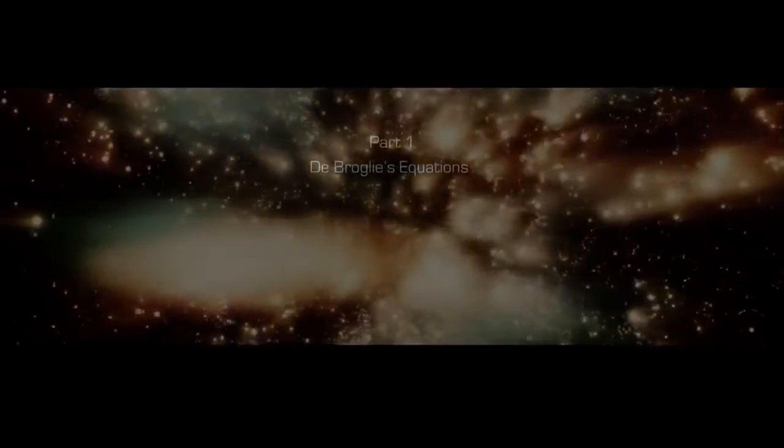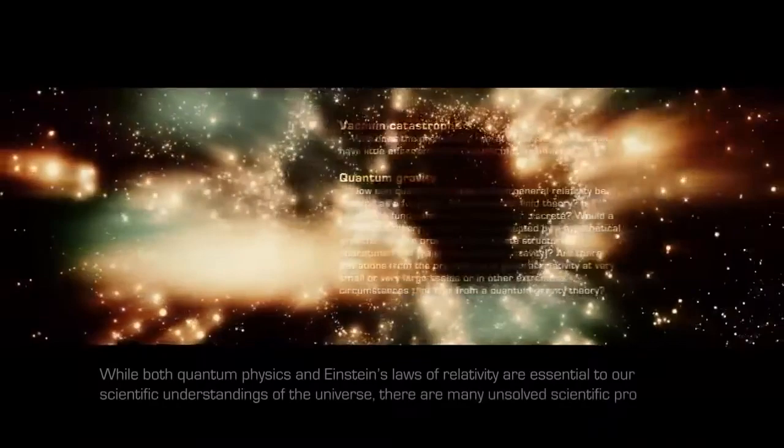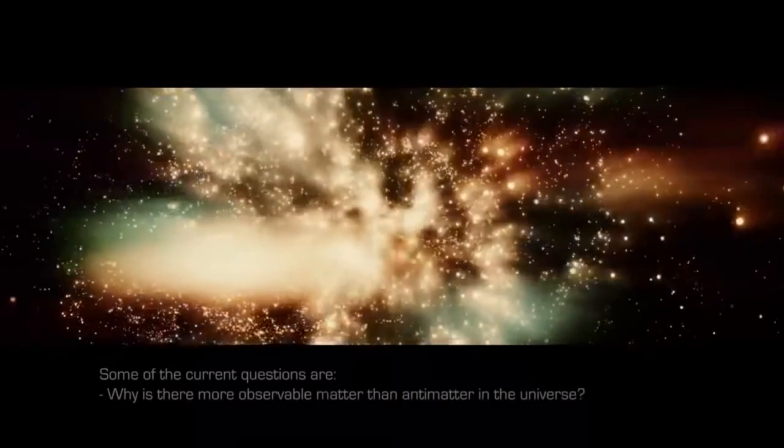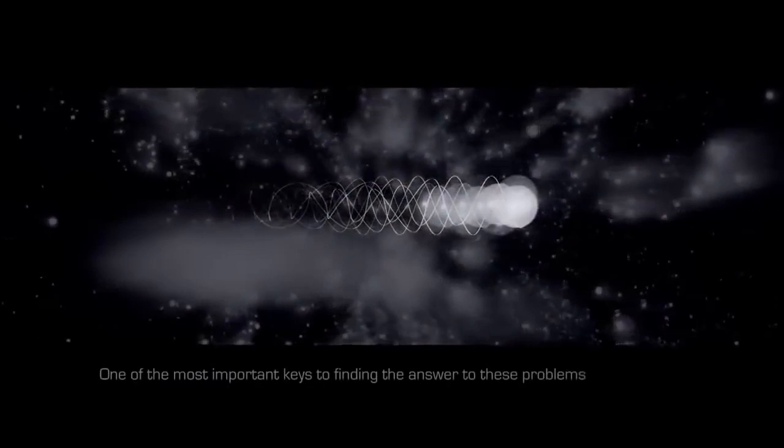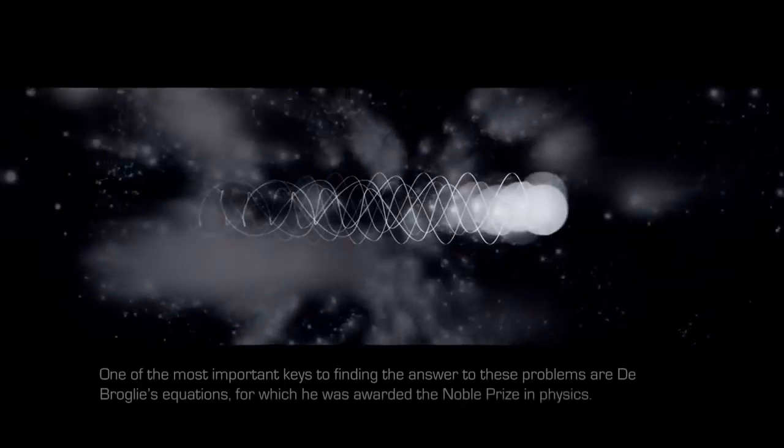While both quantum physics and Einstein's laws of relativity are essential to our scientific understandings of the universe, there are many unsolved scientific problems, and thus far no unifying theory. Some of the current questions are, why is there more observable matter than antimatter in the universe? What is the nature of the arrow of time? What is the origin of mass? One of the most important keys to finding the answer to these problems are de Broglie's equations, for which he was awarded the Nobel Prize in Physics.